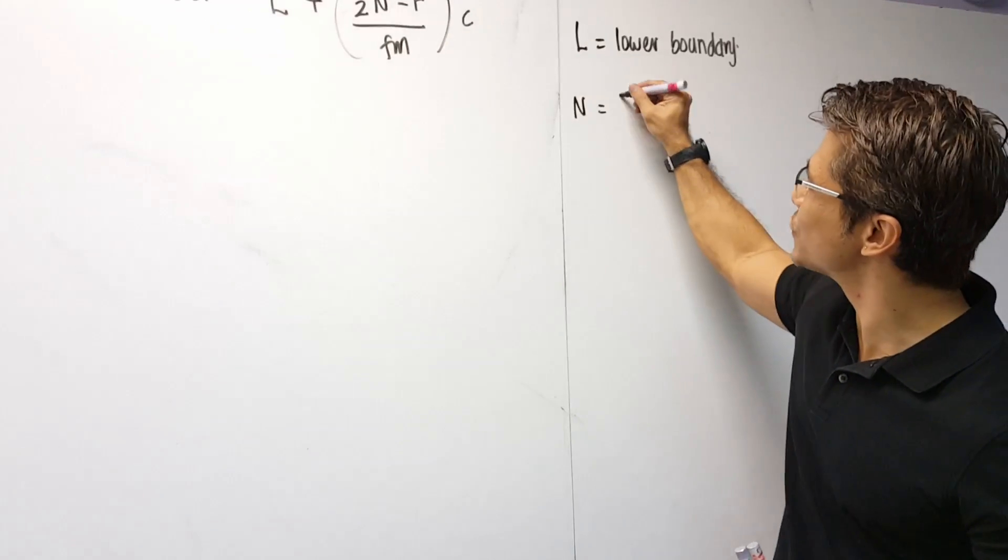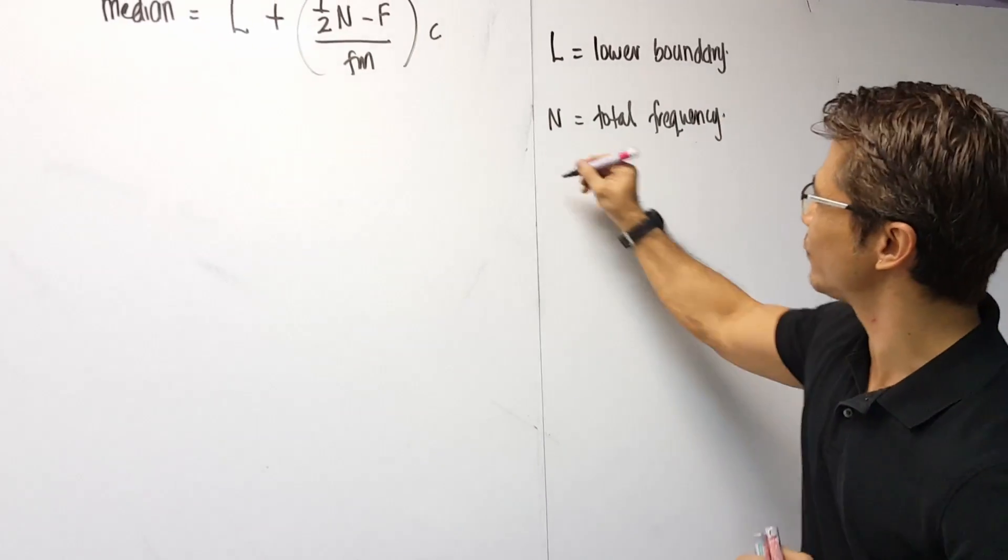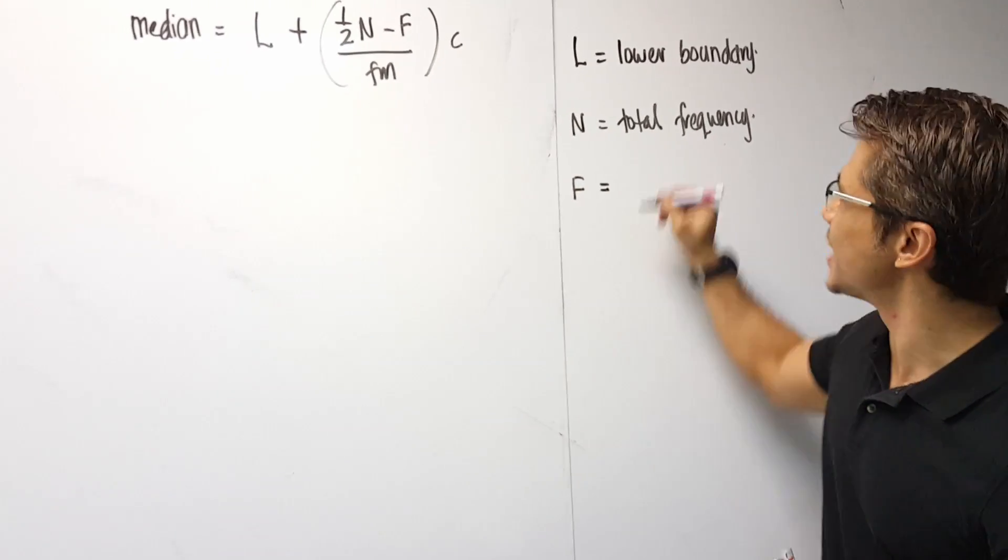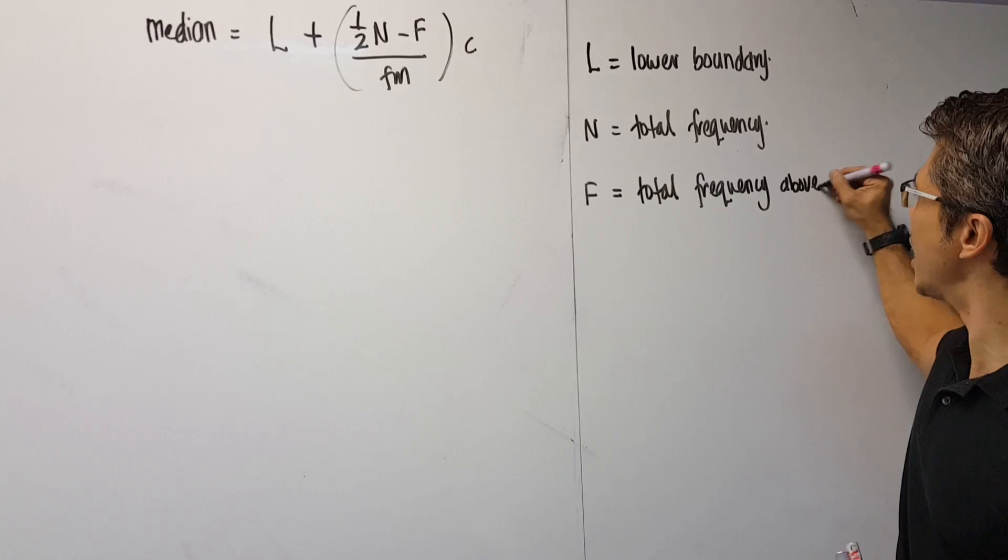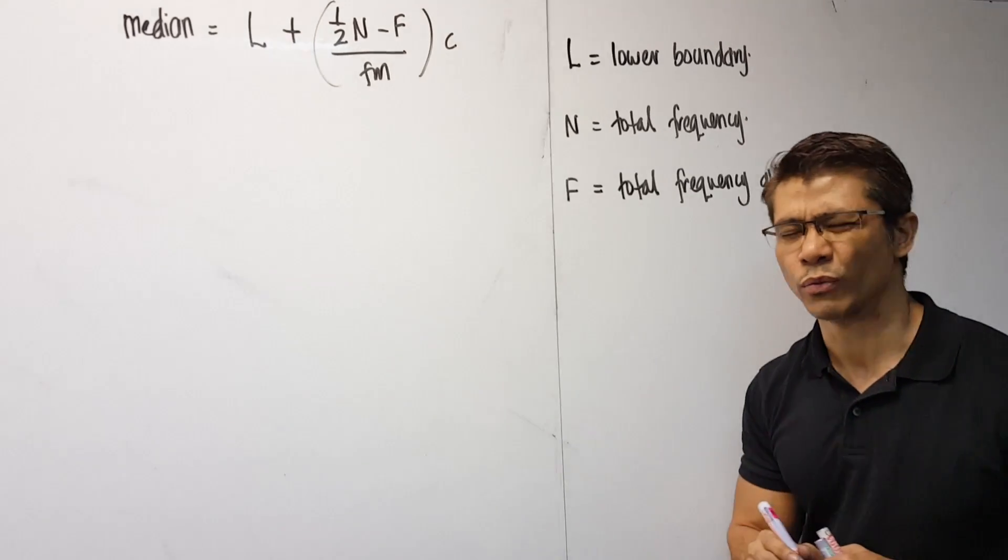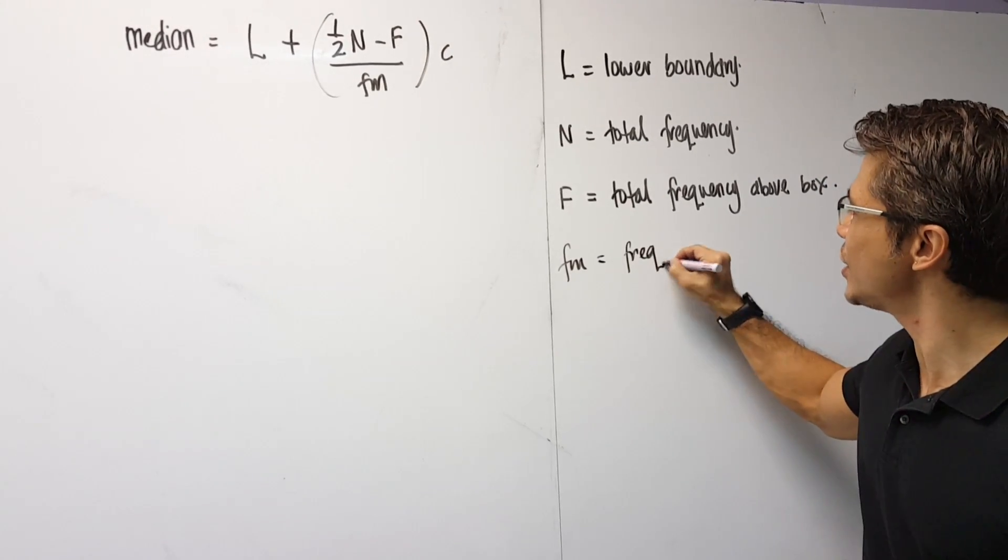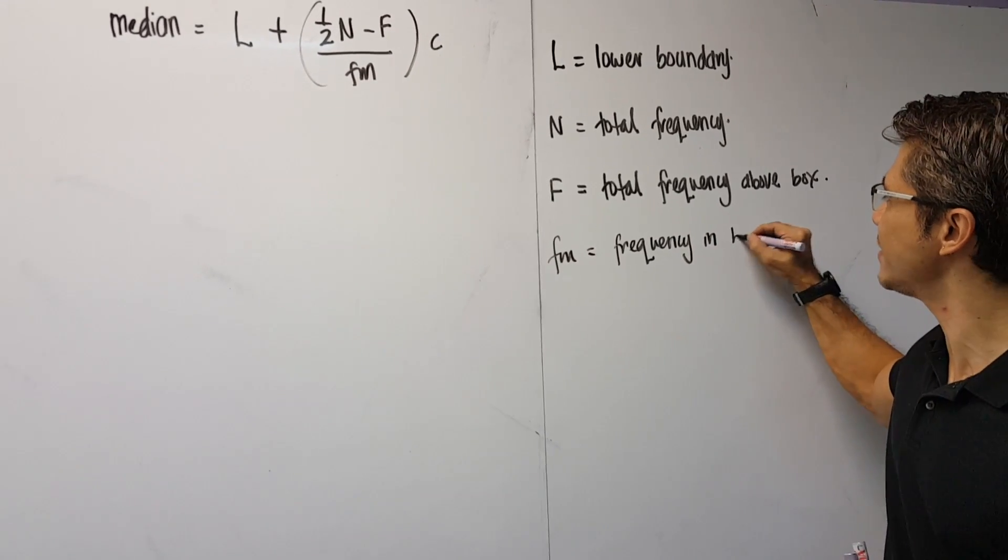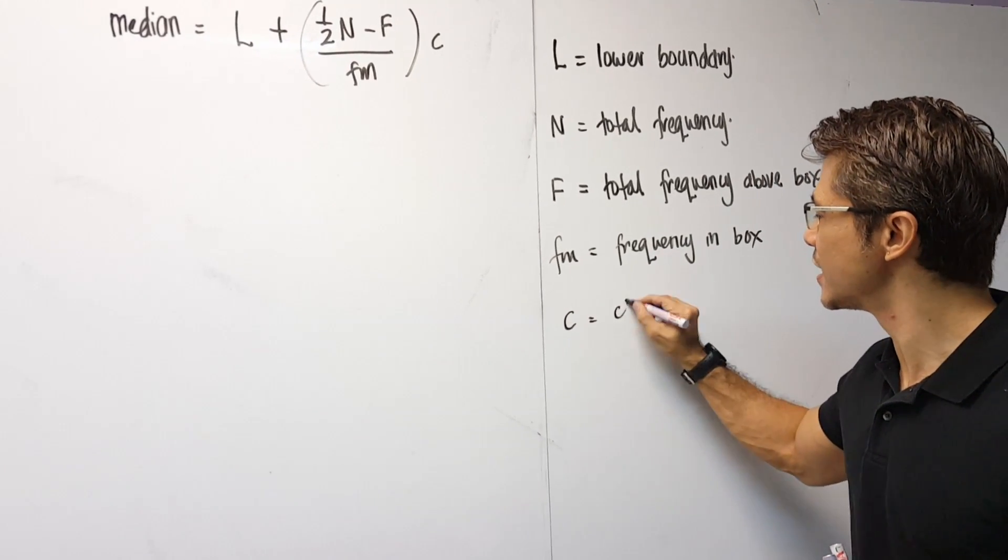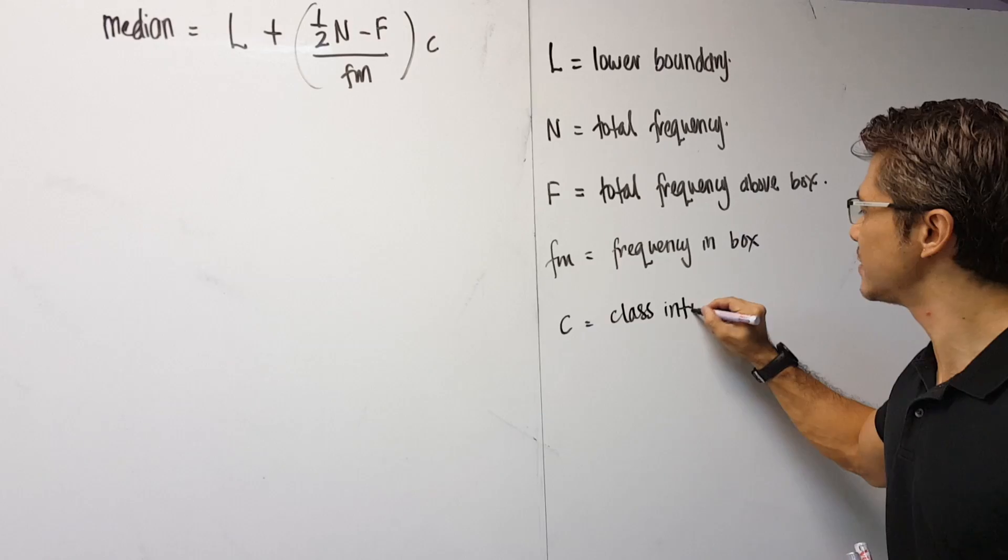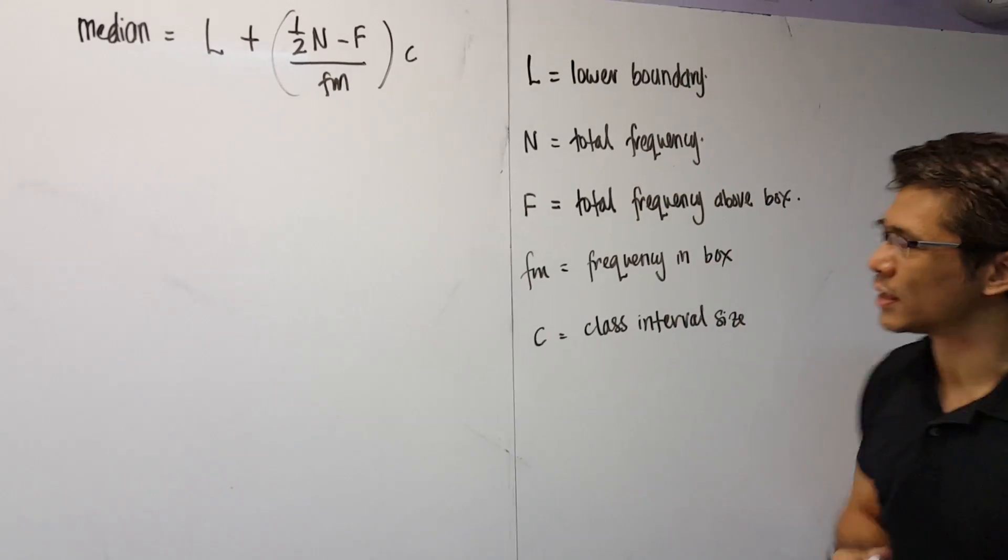So, L is for lower boundary. N is for total frequency. F is the frequency above the box. fn is for total frequency above the box. What box? Look at that. Fn is the frequency inside or in the box. And I've got C. C is the class interval size. Yeah, I've got these five letters, but how do I use them?